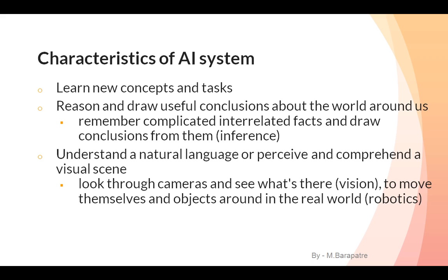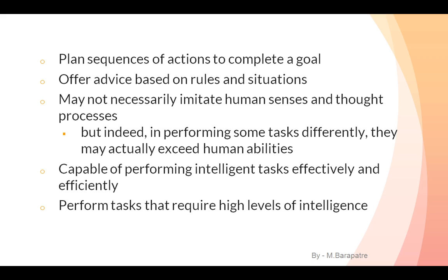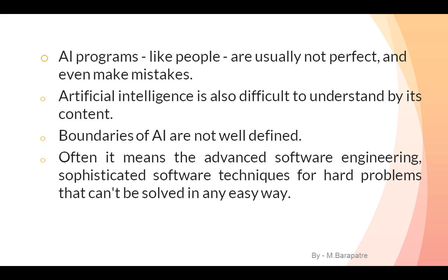Looking through a camera and identifying what is there — that is vision. AI systems can also move themselves and objects around in the real world, which relates to robotics. They plan sequences of actions to complete goals or offer advice based on rules. They may not necessarily imitate human thought processes but can perform some tasks differently, and may actually exceed human ability in performing intelligent tasks.